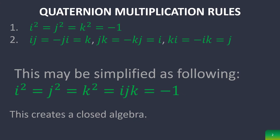As a quick reminder, the quaternion multiplication rules are as above and they can be simplified into this simple term right here. This does in fact create a closed algebra.